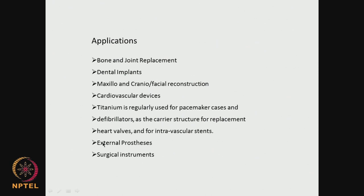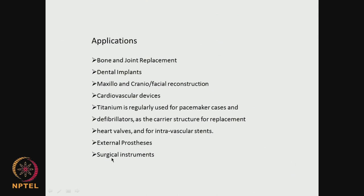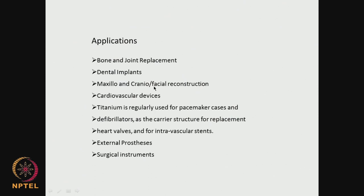External prosthesis, external joints, external support for bones that are broken inside. Surgical instruments — as you know, all surgical instruments are made up of metals. Metals have a lot of applications. The beauty of metals is you can make them in any form and shape. Because metals have been there historically for several thousands of years, the technology is well developed — we can modify their surfaces, their tensile strength, and other properties.